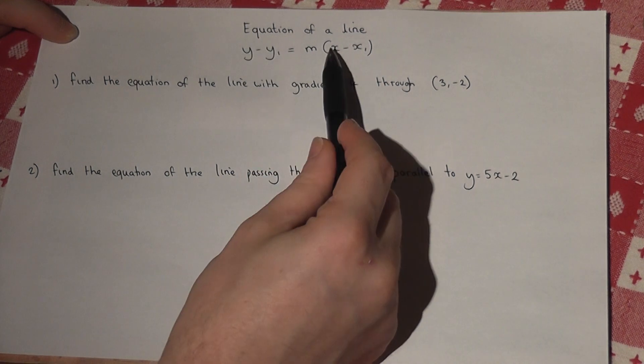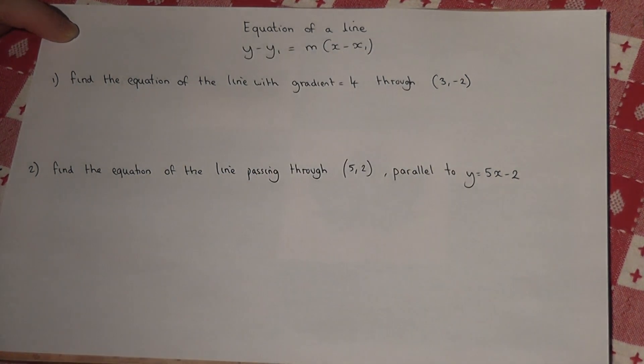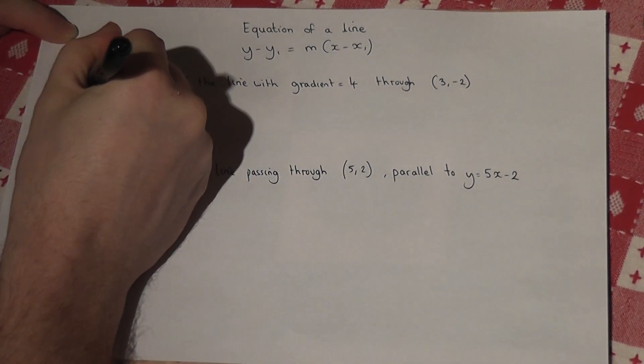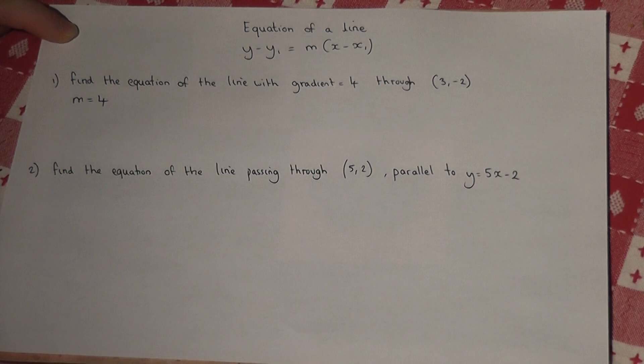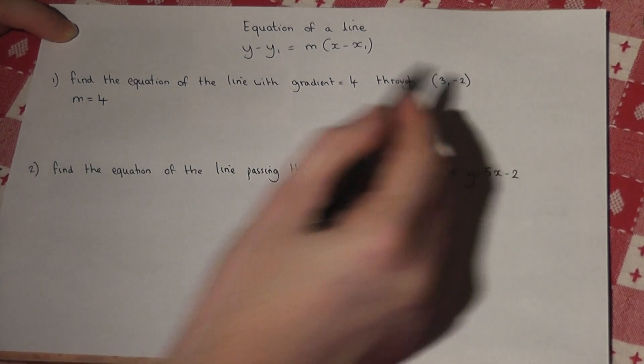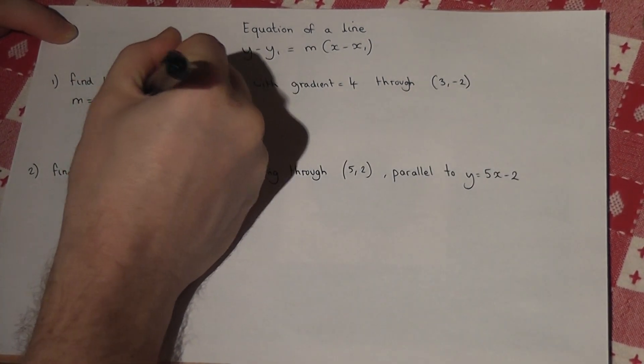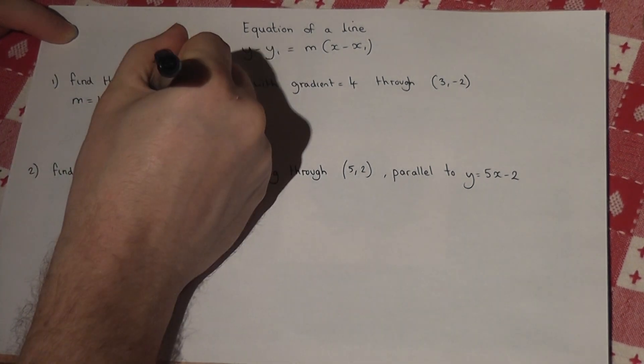y and x are just general coordinates. In the first example, our line has a gradient of 4, so m equals 4. The coordinate is (3, -2), so x1, the x coordinate, is 3, and y1, the y coordinate, is -2.